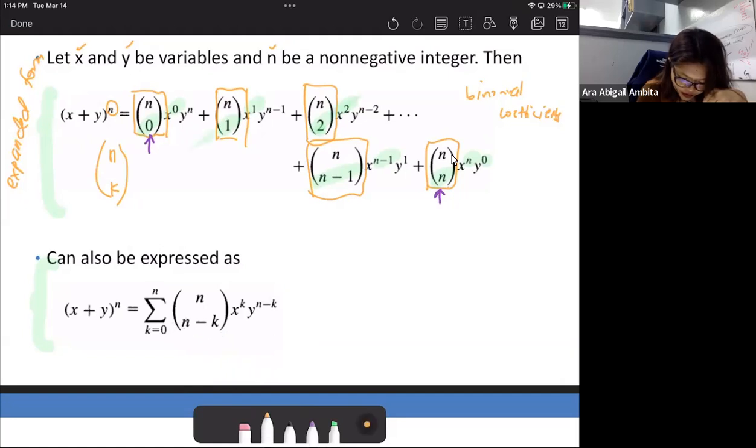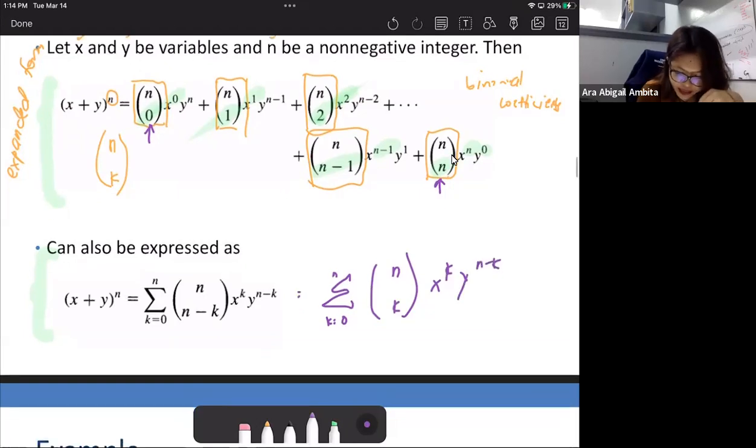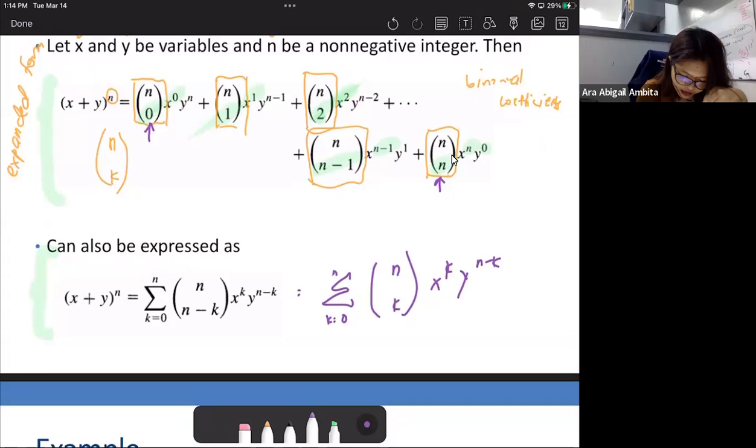So note, this is also equivalent to the summation of k from k equals 0 to n and then n taken k and x raised to n minus k. So balik ulit tayo sa identity na napag-aralan natin before. Sinabi natin na ang combination ng n taken k is equal to combination of n taken n minus k. So if we have, let's say, combination of 3 taken 1, so that would be combination of 3 taken 2. So they mean basically the same thing.